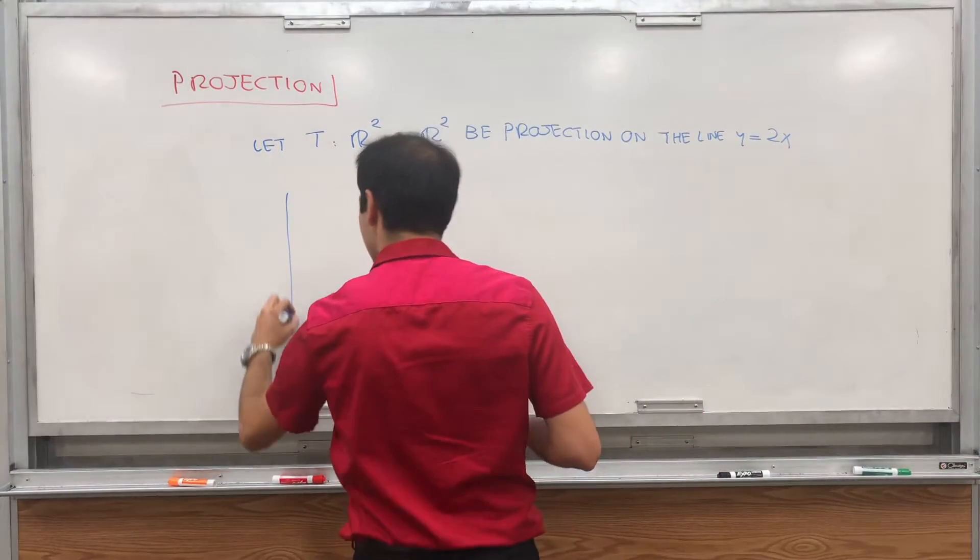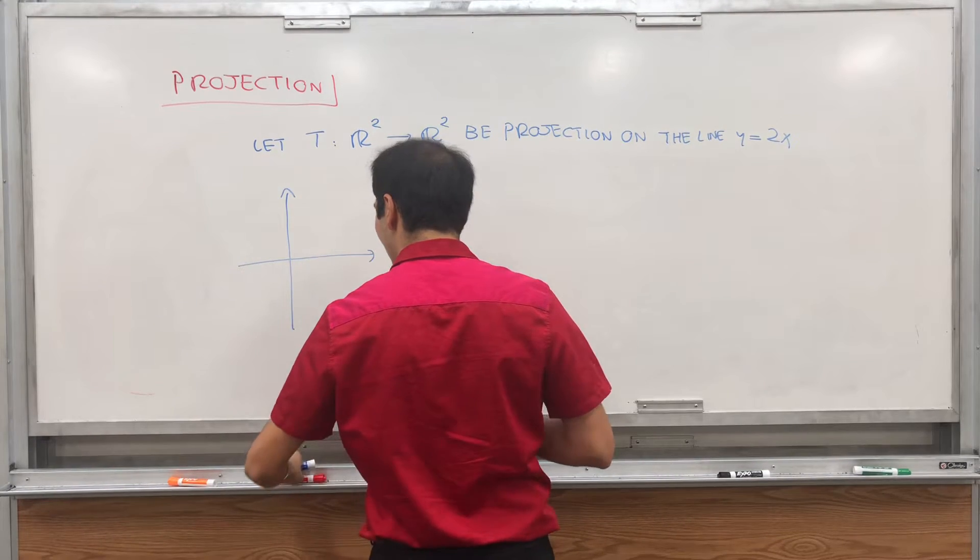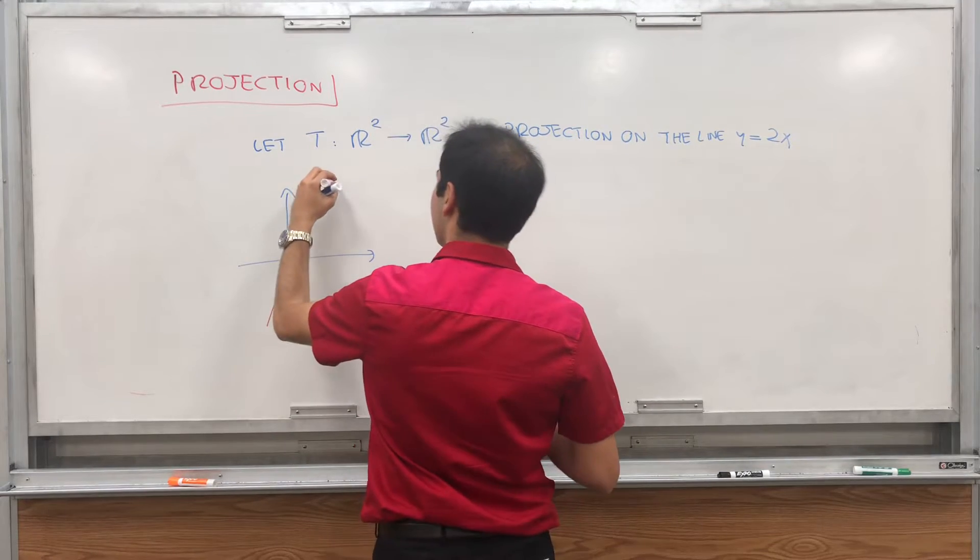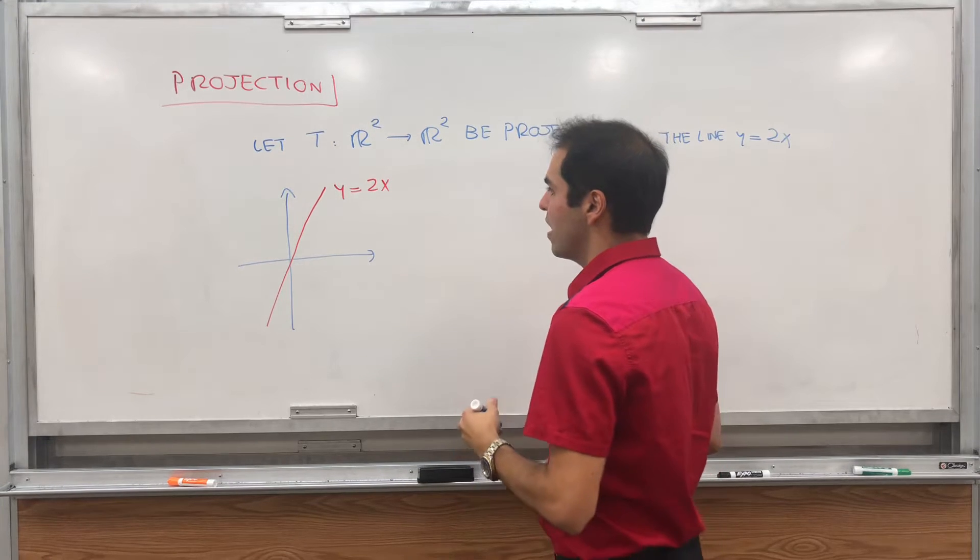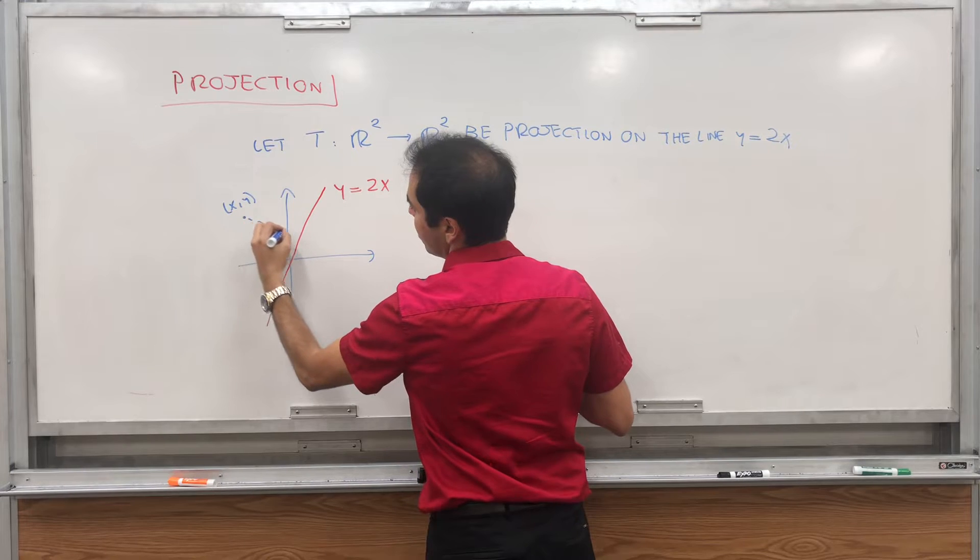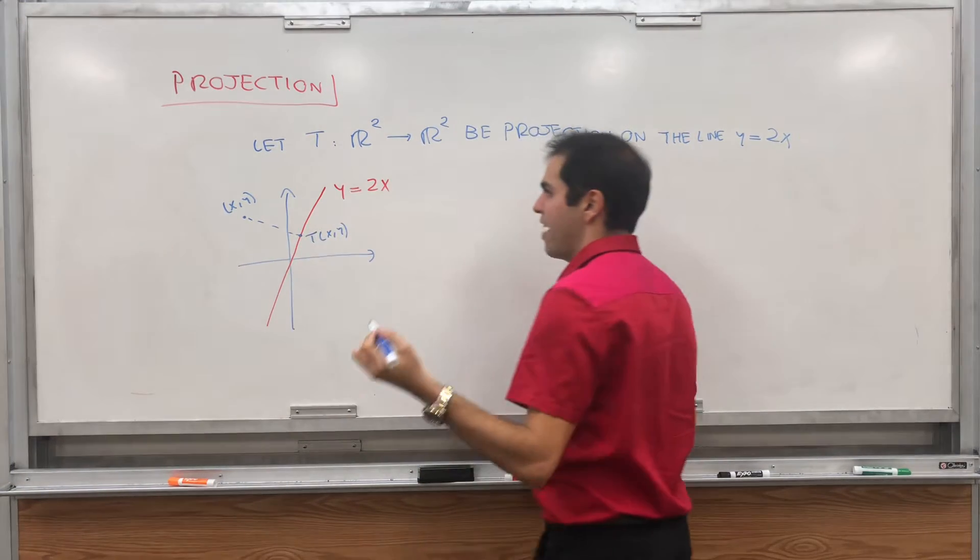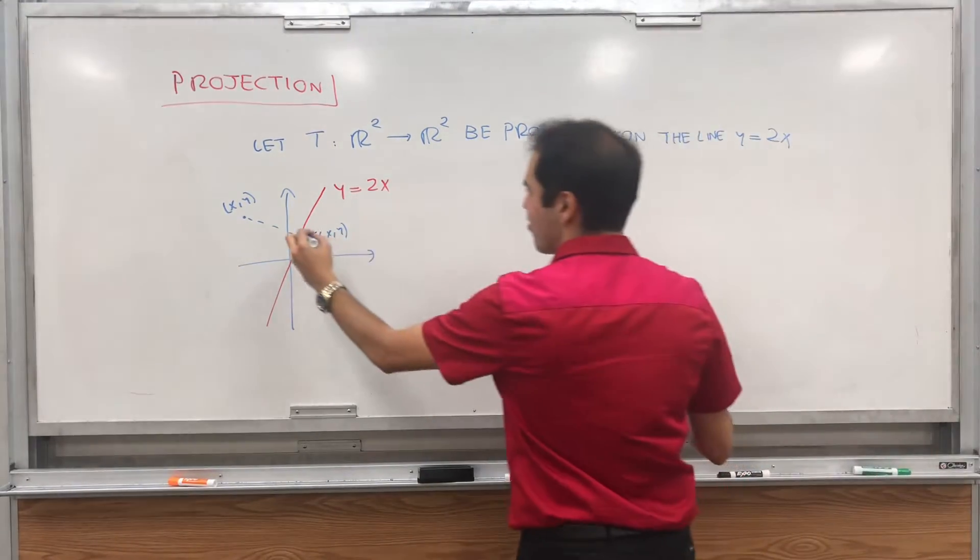So what does T do? Suppose you have this line y equals 2x. Before we reflected it, but now what we would like to do is project it. So given a point here x, y, we would like to orthogonally project it to get T of x, y. And the question is, find a formula for T.